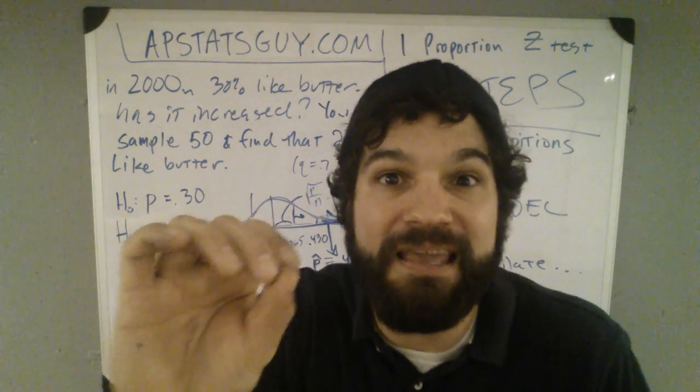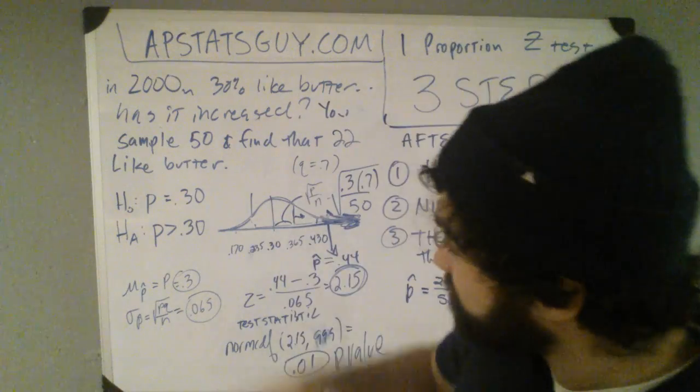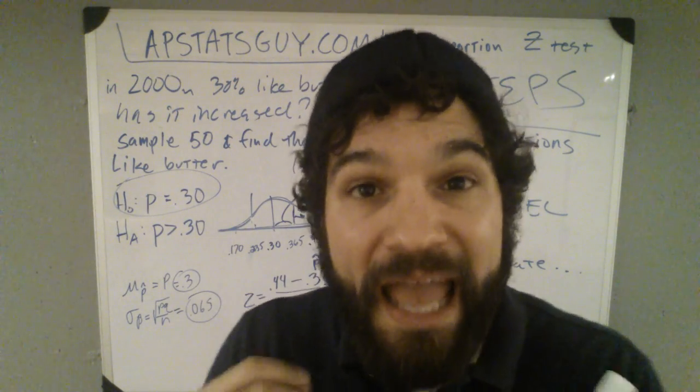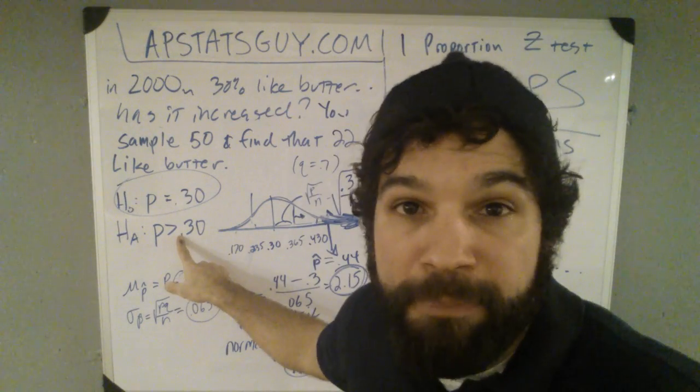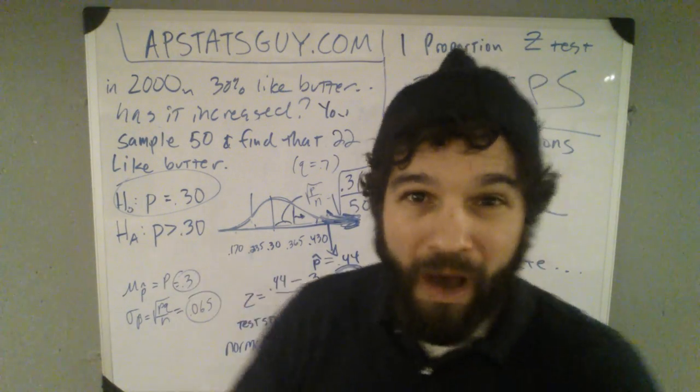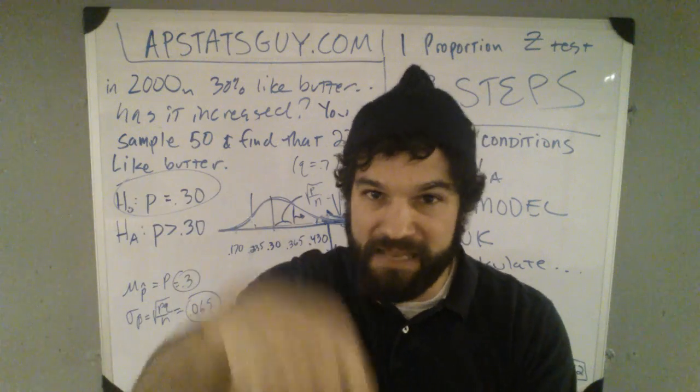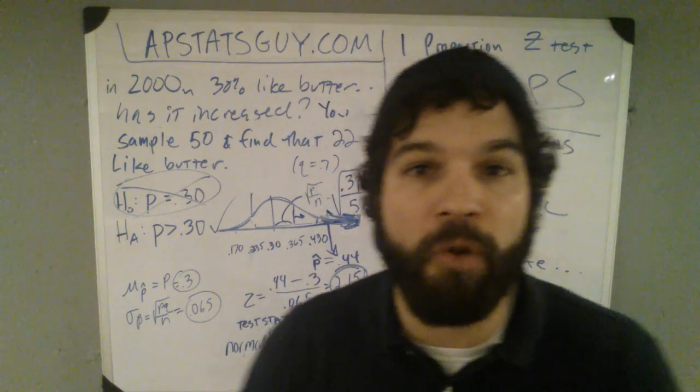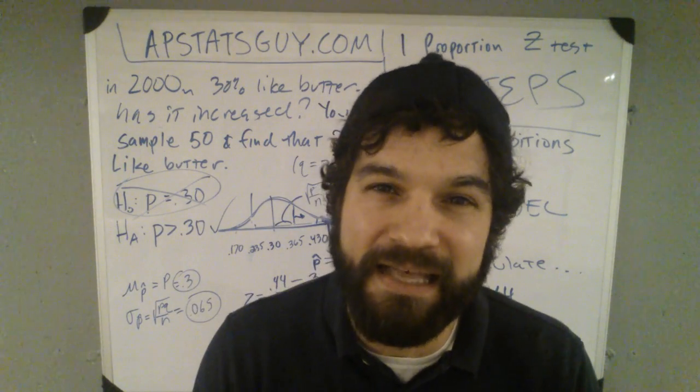As a matter of fact, with a p-value that low, I'll reject the null. There's strong evidence that more people like butter now. Why am I saying that? That's my conclusion. With the p-value, I'm rejecting the null. I'm going with this. This is what I'm saying. There's more people like butter now. Why am I saying that again?